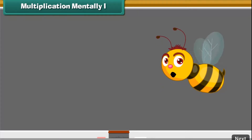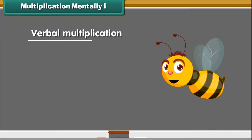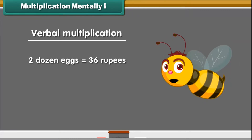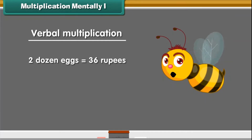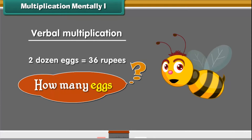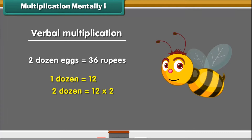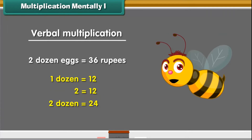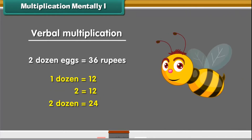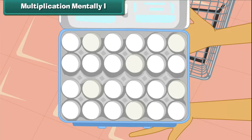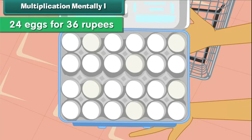Let us look at some examples of verbal multiplication. Jennifer buys 2 dozens of eggs for 36 rupees. How many eggs did she buy? We know 1 dozen equals 12. Therefore, 2 dozen will be equal to 24. Thus, Jennifer bought 24 eggs for 36 rupees.